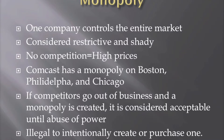An example would be Comcast, which has a monopoly on the cities of Boston, Philadelphia, and Chicago, meaning they're the only cable provider in those cities. If competitors go out of business and a monopoly is accidentally created, it is considered acceptable until an abuse of power. On the other hand, it is illegal to intentionally create or purchase a monopoly.